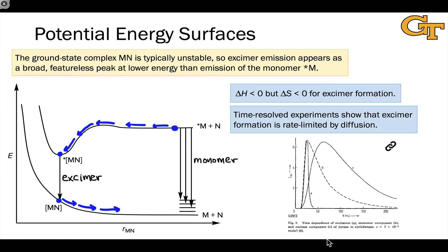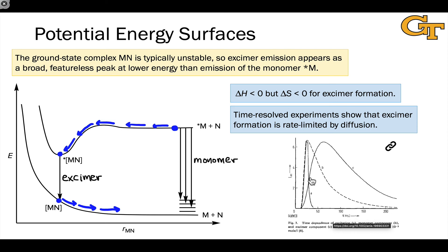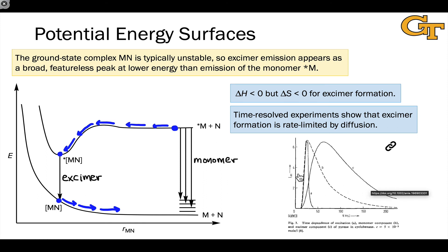This graph shows the excitation of the sample — a pulse was applied to excite the sample, shown as curve A. Curve B shows the monomer emission, and curve C shows the exomer emission. Based on the nanosecond timescale, it becomes clear that exomer formation is essentially rate-limited by the rate of diffusion — that essentially every time an excited state molecule collides with a ground state molecule, exomer formation takes place. That kinetic model fits well with this data, which shows very rapid formation of the exomer after the excited state of the monomer is generated.